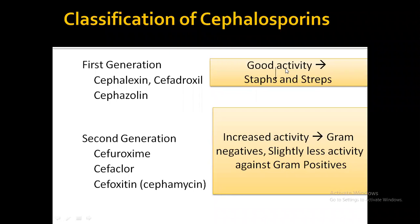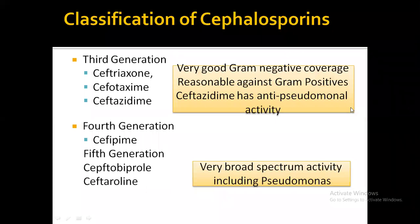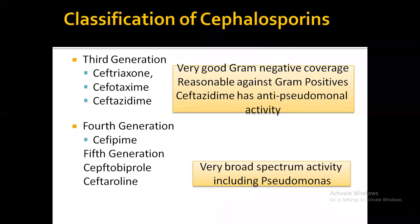Roll number 66 is asked what the third generation is active against. Student answers: active against both gram-positive and gram-negative, and we have anti-pseudomonal activity. The instructor then notes that among the third generation cephalosporins, WHO has chosen ceftriaxone as the drug of choice for typhoid infection.